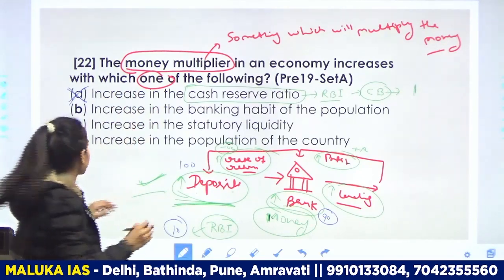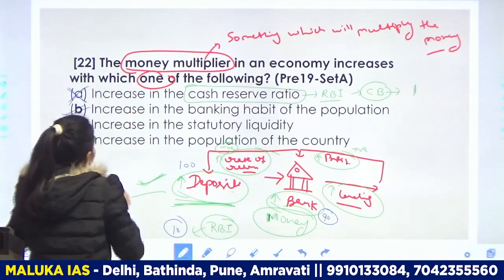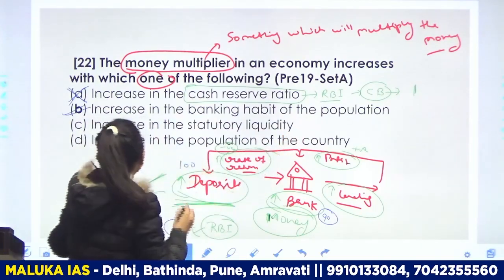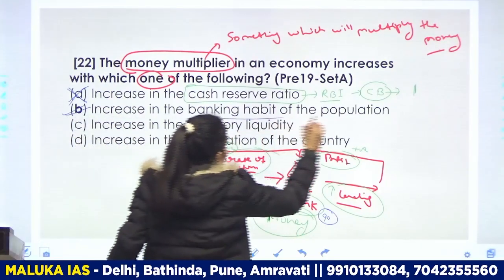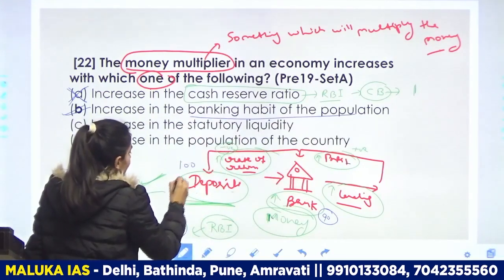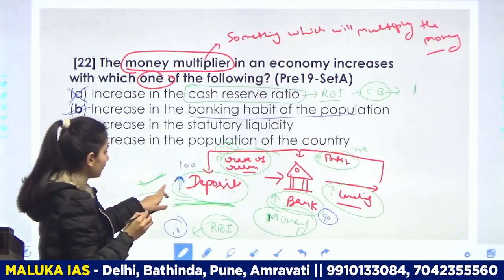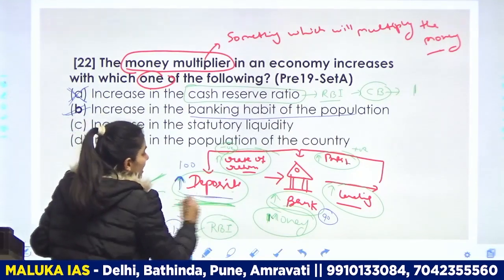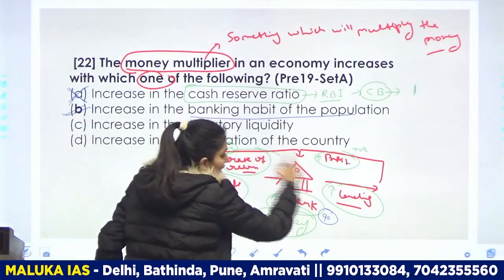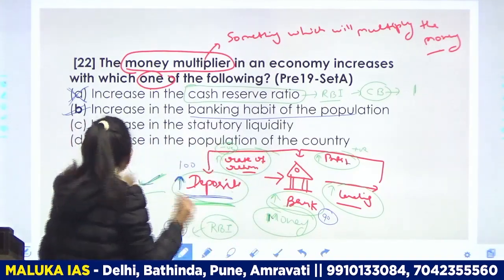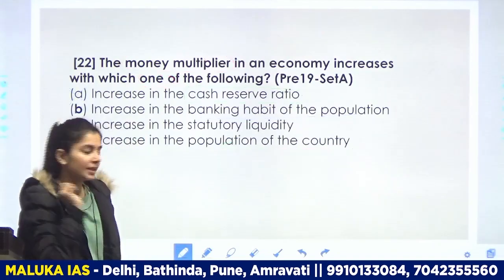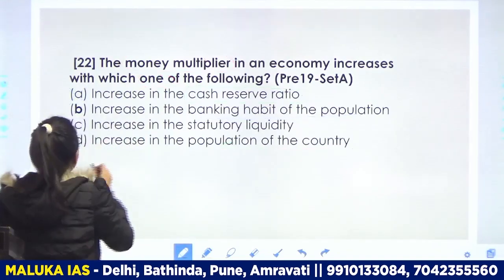Next option: increase in the banking habit of the population — अगर population की banking habit बढ़ रही है, तो deposits ज्यादा होंगे। मैंने वही point बोला था — जब deposits ज्यादा होंगे तो यह process ज्यादा flow करेगी। इसका मतलब option B correct है।